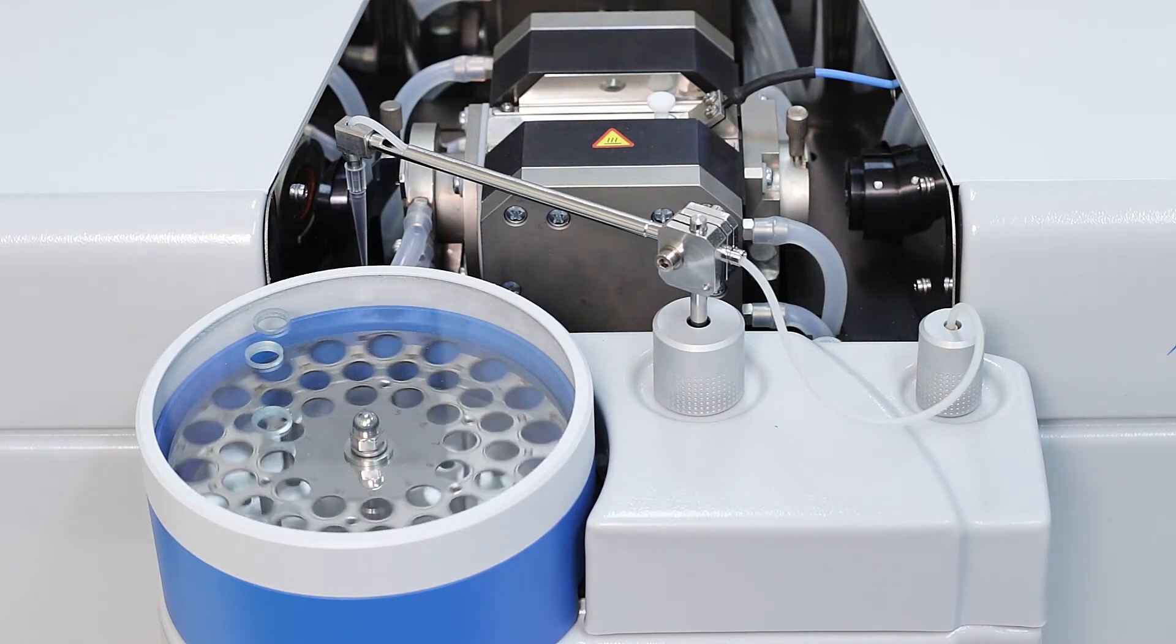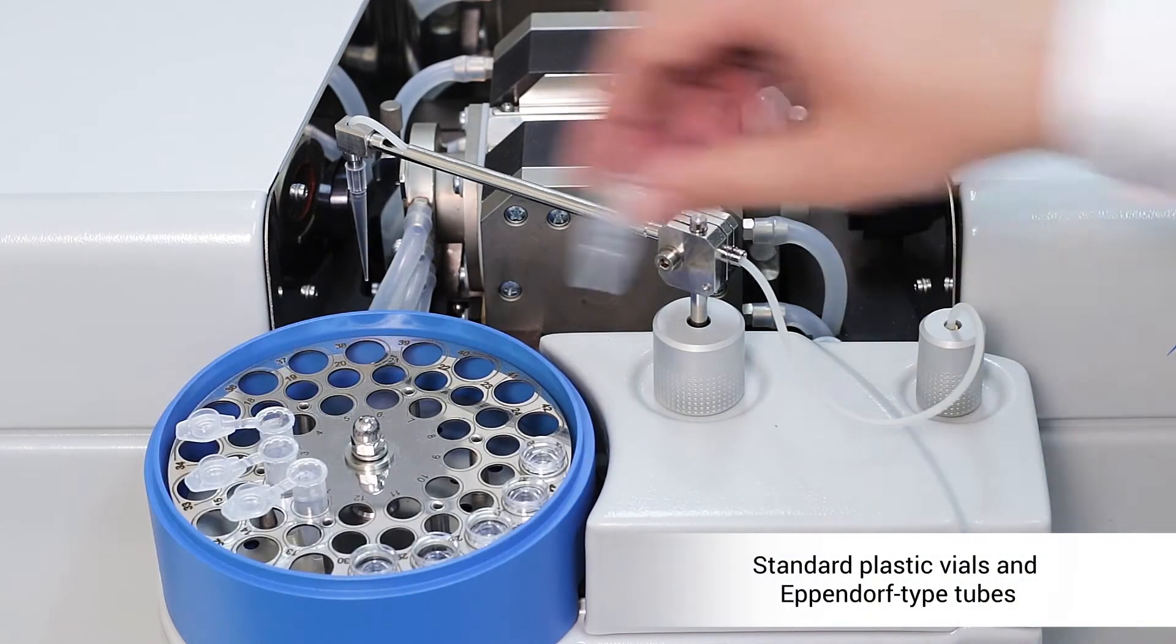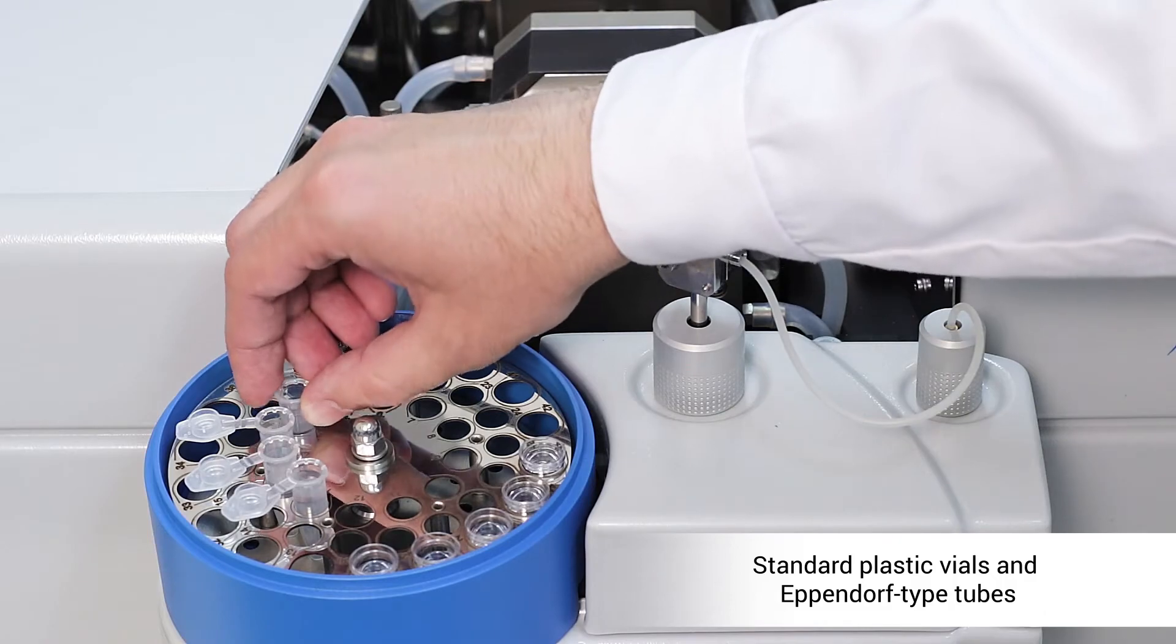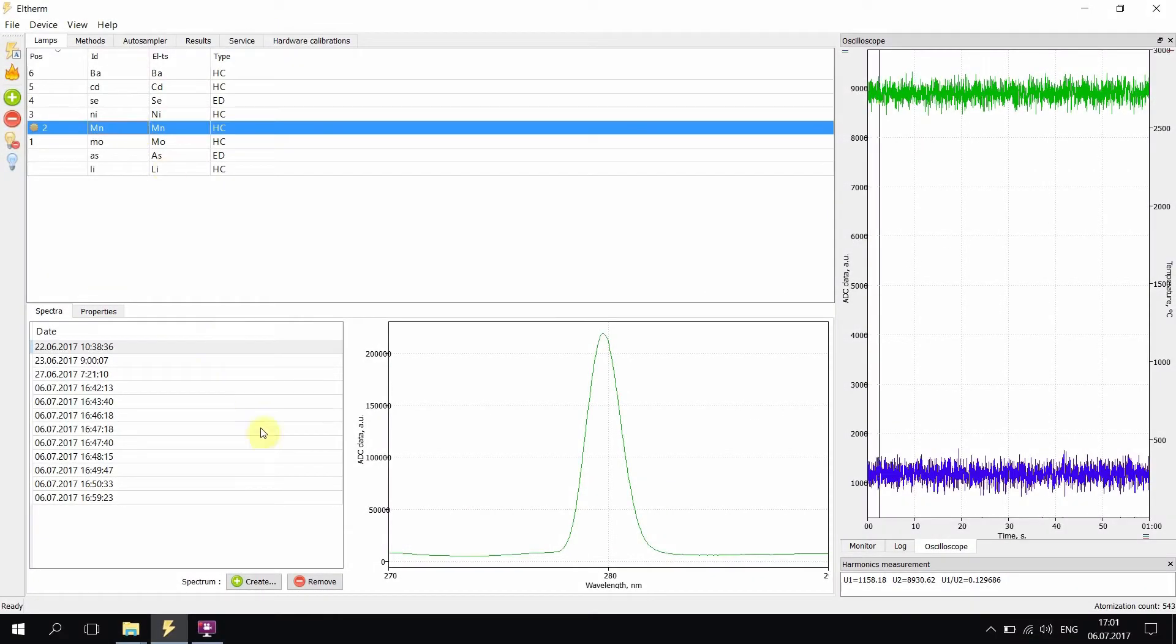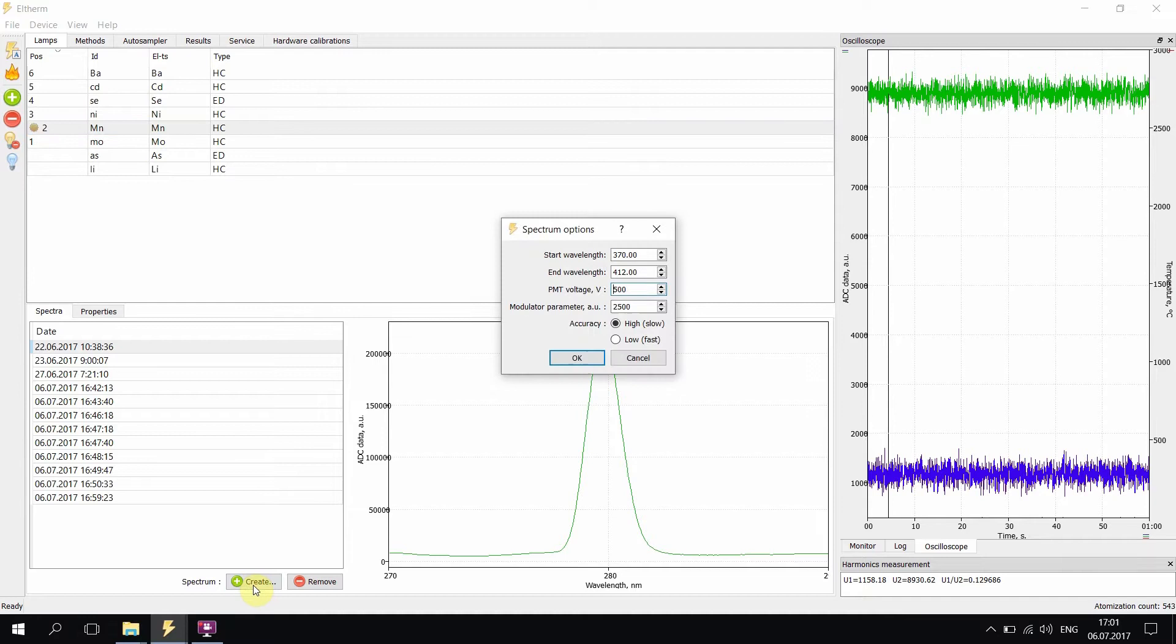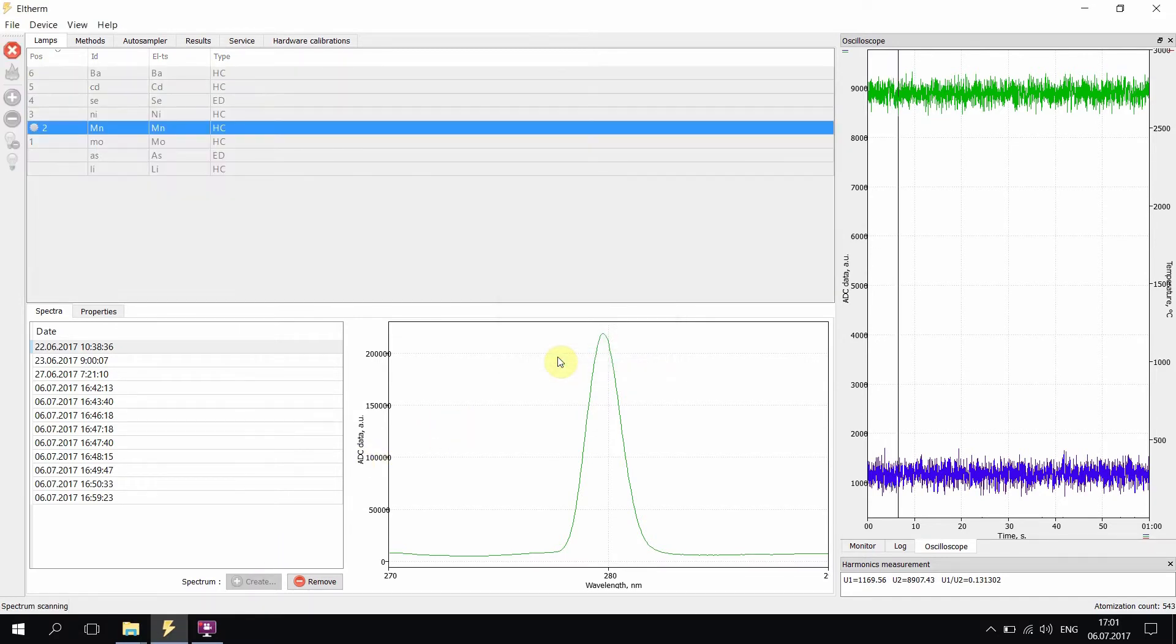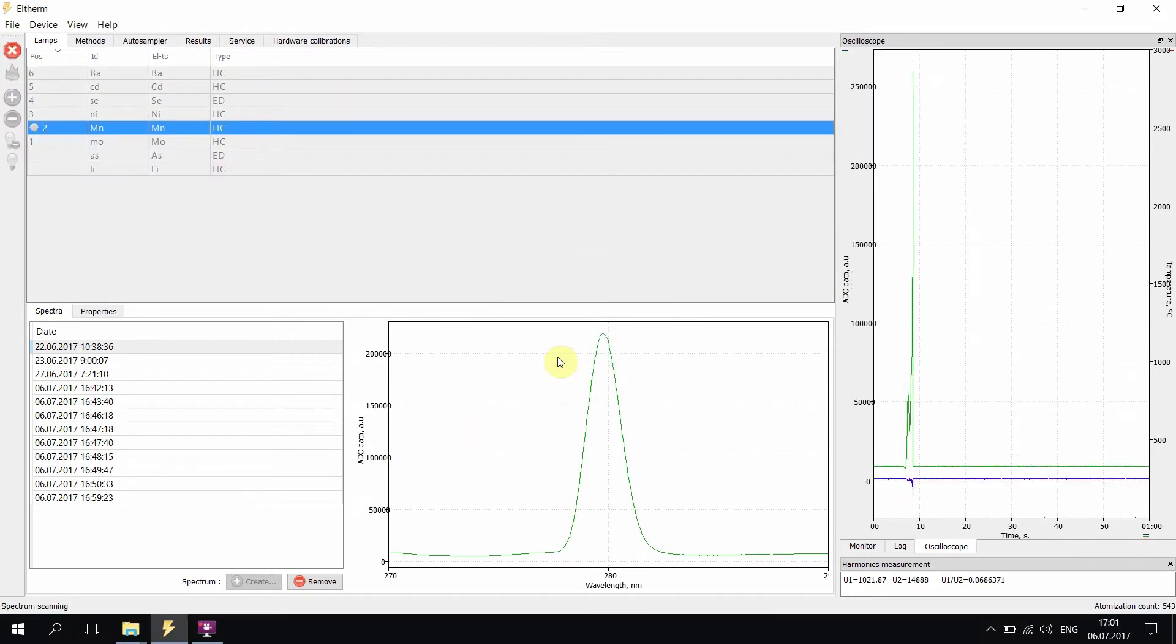The auto-sampler accommodates standard plastic vials and Eppendorf-type tubes. MGA-1000 comes with user-friendly software for setting operating conditions, data storage, and processing.